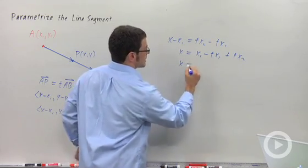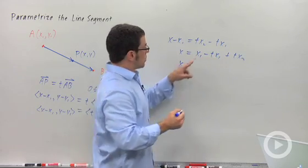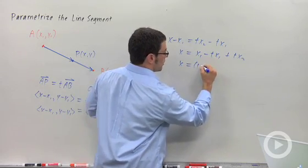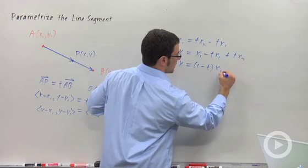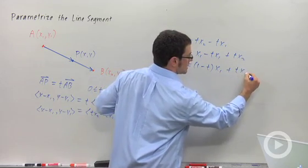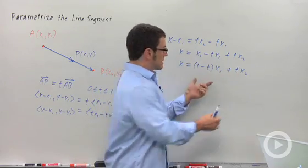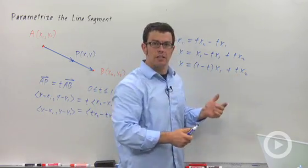And that gives me x equals, notice that I have a common factor of x1. I can pull out the 1 minus T and I'm left with x1. 1 minus T times x1 plus T times x2. Now because T is between 0 and 1, this is like a weighted average of x1 and x2.